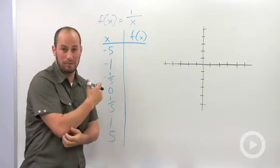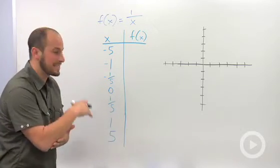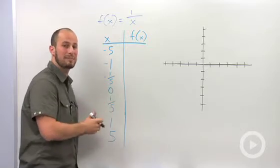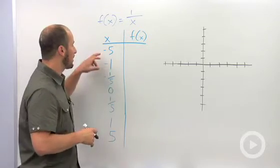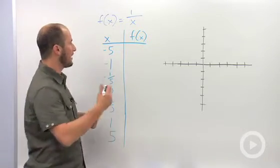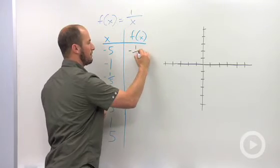Behind me I have a table. We're just going to plug in some values and see what values come out. So if x is equal to negative 5, we end up with negative one-fifth.